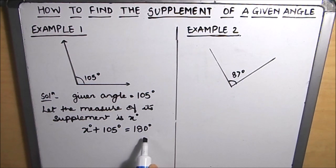Now we have got the equation, we just need to find the value of x. For finding x, we just need to transpose 105 degrees to the right hand side. So 180 minus 105 degrees will give us 75 degrees. So this is our required supplement angle.